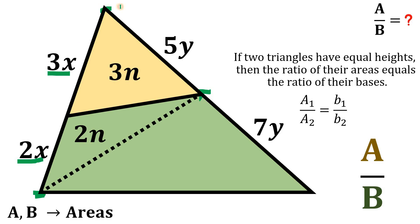Now, let's focus on this big triangle with the base 5y and 7y. So, we have the same height again. And the area of this is 5n. So, this corresponds to 5y.